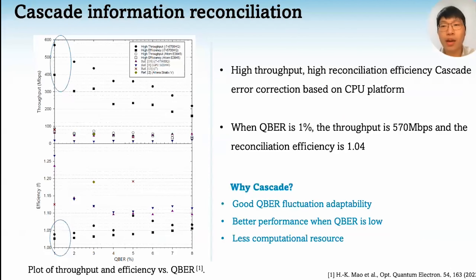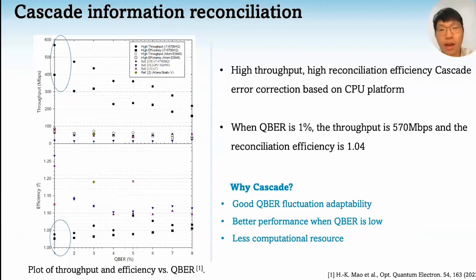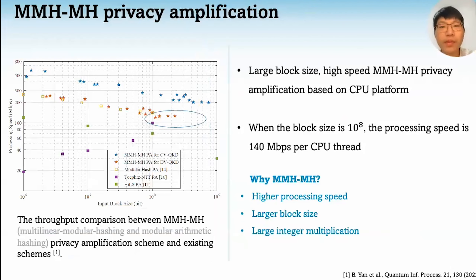As for high-speed pulse processing, our previous works have studied the error correction and privacy amplification algorithms separately. For error correction, we choose cascade code for the following reasons: firstly, it is a rateless code and has good QBER fluctuation adaptability; secondly, when the QBER is as low as 1%, as in our case, the speed and efficiency are both better; moreover, its computational resource consumption is less than that of other codes. To meet the demand for high-speed pulse processing, we also design a privacy amplification scheme combining multilinear modular hashing and modular arithmetic hashing algorithm.